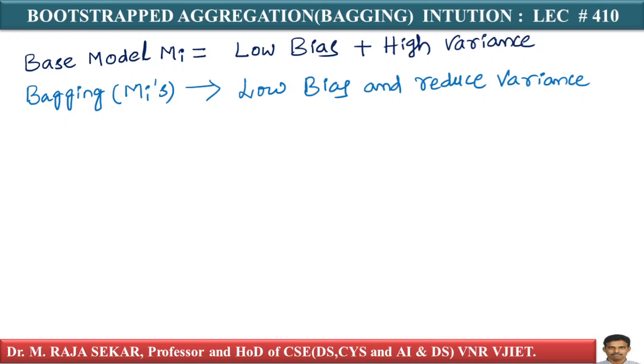Model generalization error depends on bias squared and variance. If each base model M_i is a low-bias and high-variance model, then by performing bagging on M1, M2, through Mk, the overall variance is reduced without impacting the bias. Bagging of M_i models gives low bias and reduced variance.